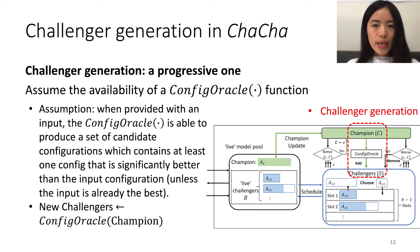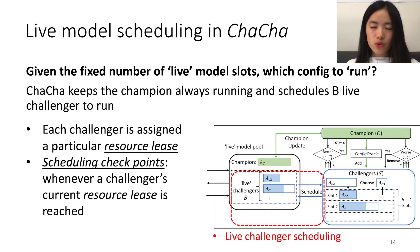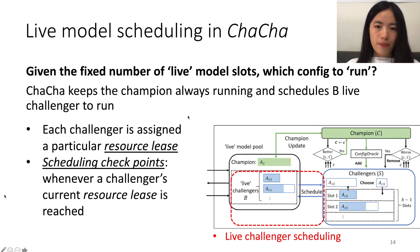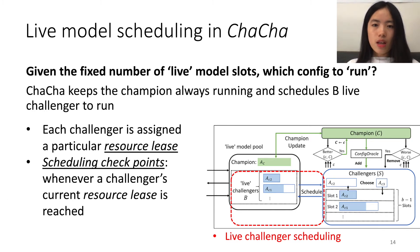Now that we have found a way to progressively construct the search space, it is still likely that the total number of Challengers is larger than the maximum number of live models allowed. So we need to further decide which configurations to run. ChaCha keeps the Champion always running, because the Champion is the best configuration identified so far.